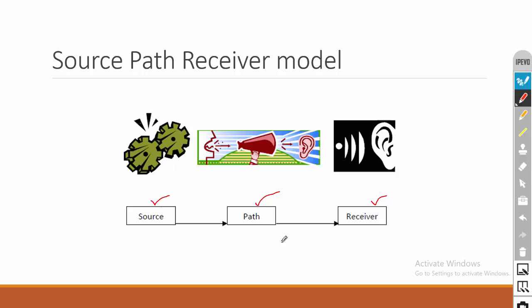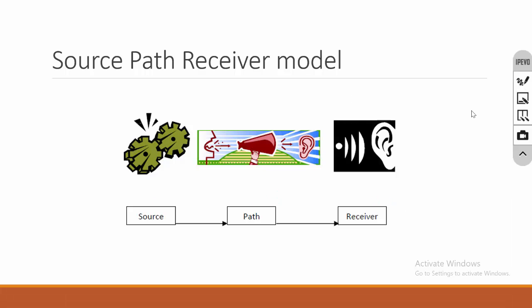The floor is transmitting the vibration. In some cases, because of vibration, noise may be generated, and that noise is transmitted through the air medium — there air is the path. The third is the receiver. When you are standing, your leg will feel the vibration — your leg is the receiver. In the case of noise, we can feel the sound, so we are the receiver.